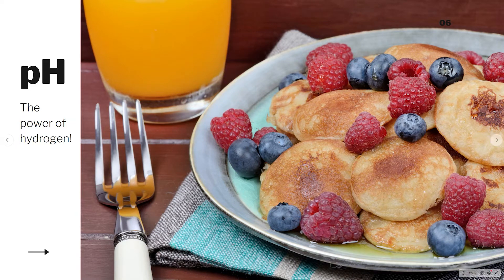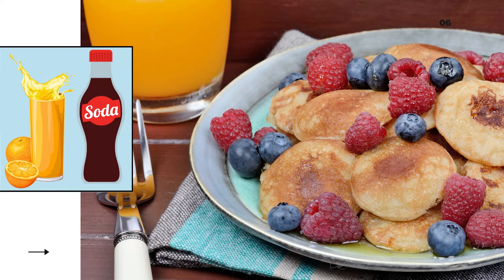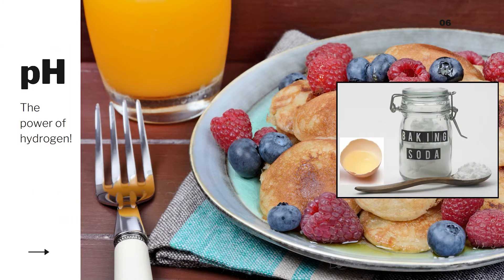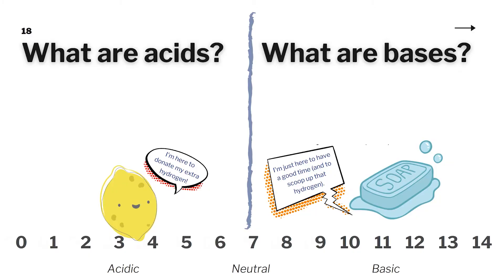Even if you've never set foot in a chemistry lab, chances are you know a thing or two about acids and bases. Have you ever drunk orange juice or soda? If so, then you know some common acidic solutions. And if you've ever used baking soda or egg whites in your cooking, then you're familiar with some bases. In fact, the interaction between buttermilk, which is acidic, and baking soda, which is basic, brings us the fluffy magic that is buttermilk pancakes. So what are acids and bases?